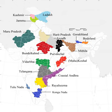Marathwada is one of the five regions in the Indian state of Maharashtra, coinciding with the Aurangabad division. Marathwada came under the rule of the Nizam of Hyderabad, which later became the princely state of Hyderabad under British suzerainty. Through Operation Polo, a police action on 17 September 1948, the Indian army annexed Hyderabad to India, and on 1 November 1956, Marathwada was transferred from Hyderabad state to Bombay state. On 1 May 1960, Bombay state was divided into Maharashtra and Gujarat states, with Marathwada becoming part of the former.